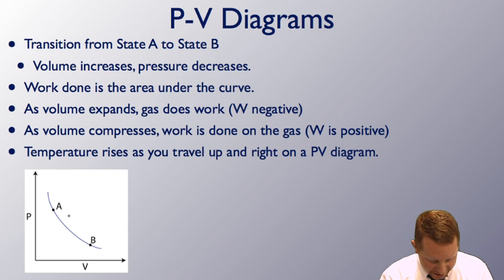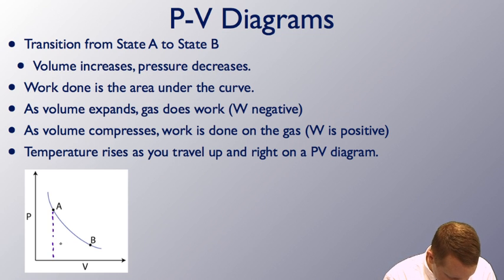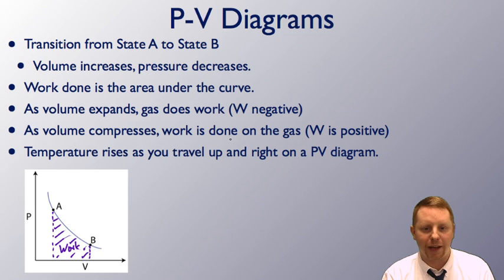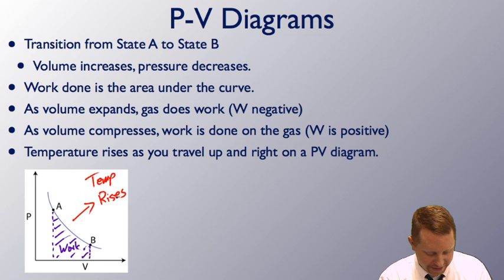As you transition from state A to state B on a PV diagram, notice that the volume increases and the pressure decreases. The work done is the area under the curve, so going from A to B the work done is that area. As the volume expands, the gas is doing work, so W is negative. As the volume compresses, work is done on the gas, so W is positive by our sign convention. Temperature rises as you travel up and to the right on a PV diagram.